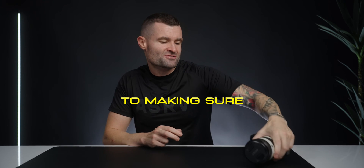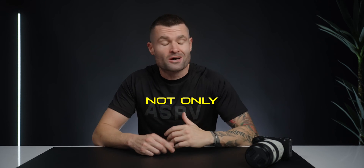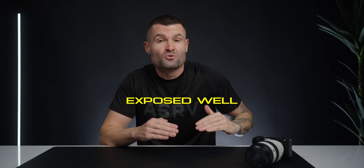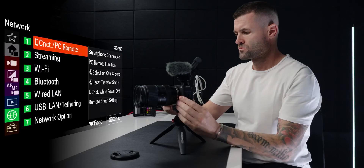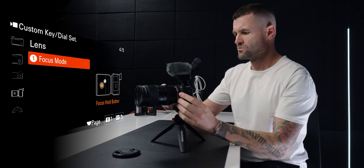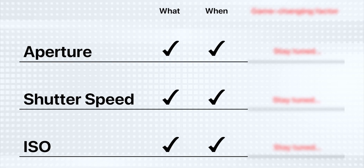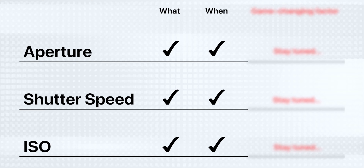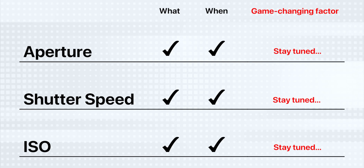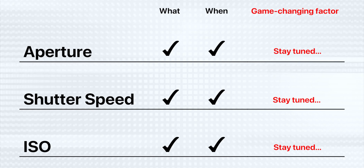Aperture, shutter speed, and ISO are the keys to making sure that your photos and videos not only come out exposed well, but also that they're extremely sharp. But to gain true mastery over your camera and unlock complete creative control, you're not only going to have to know what those are and when to use them — you have to understand one game-changing thing when it comes to each of them.